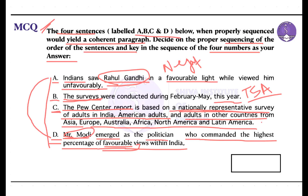The whole para-jumble question refers to nothing but a political survey. The survey is indicating the idea of who could be the next prime minister — whose survey might be conducted. On the basis of that, the kind of result is given.